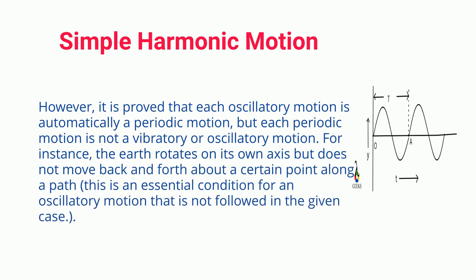For instance, the Earth rotates on its own axis but does not move back and forth about a certain point along a path. This is an essential condition for an oscillatory motion that is not followed in the given case.